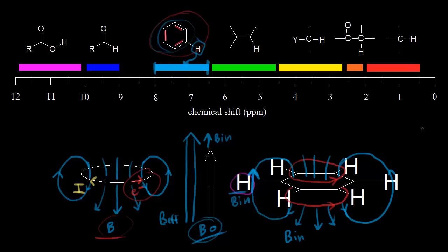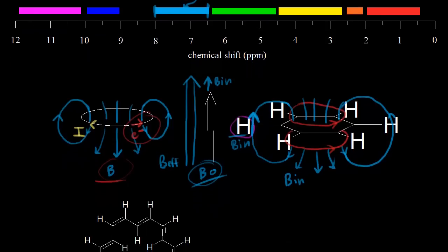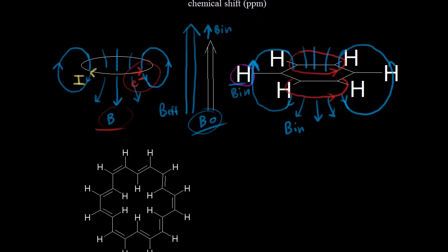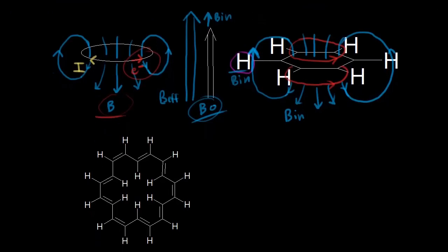There are several molecules that demonstrate this effect very dramatically. If we look at this molecule, we have a giant ring with many pi electrons — more than benzene — with alternating single and double bonds. If you put this molecule into an external magnetic field, you get the same situation as benzene.